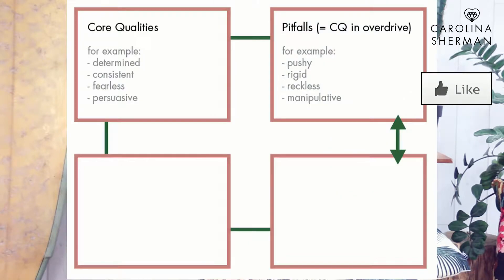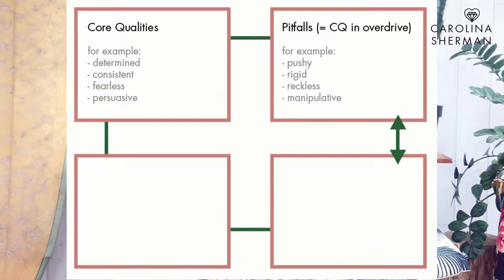When we go in overdrive on that quality and are being too determined, then we get pushy. Or too consistent and we get rigid. Or too patient and we get passive. Or too persuasive and we get manipulative. Or too fearless and we become reckless. That's a pitfall. You've probably heard this before when someone said to you, 'don't be so...' — that's when you go in overdrive on your good quality.